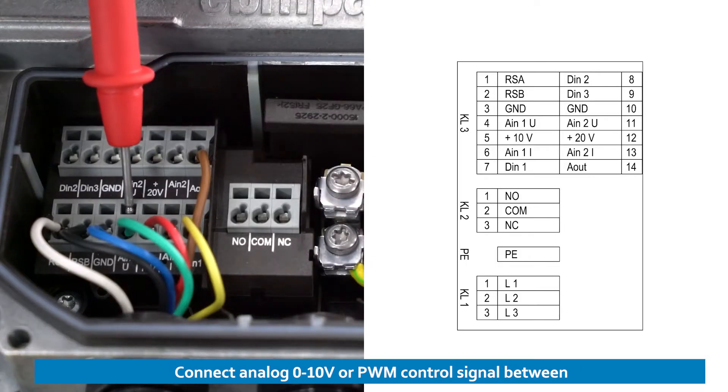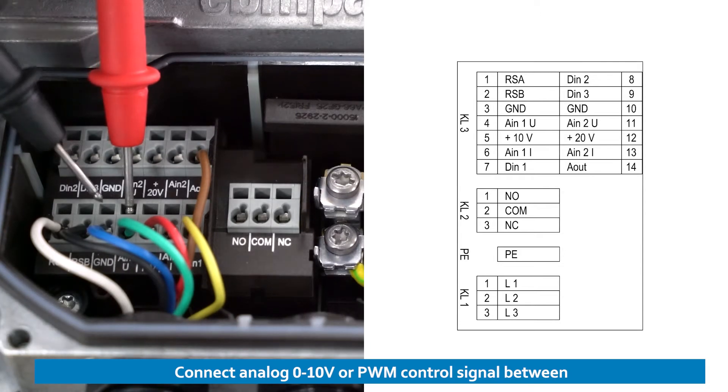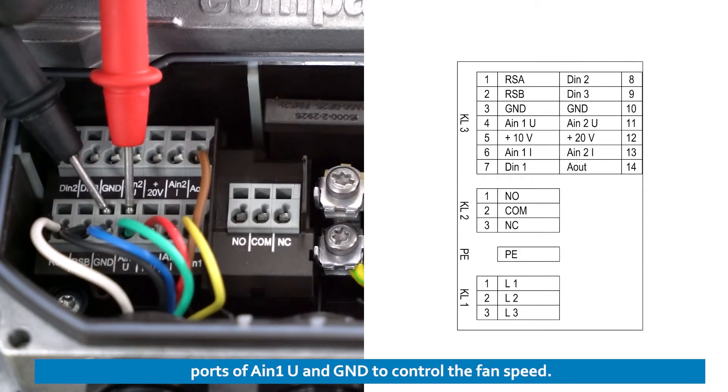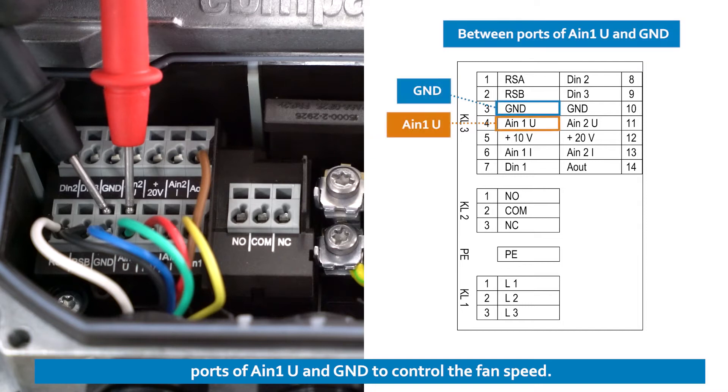Connect an analog 0-10V or PWM control signal between the AIN1U and GND ports to control the fan's speed.